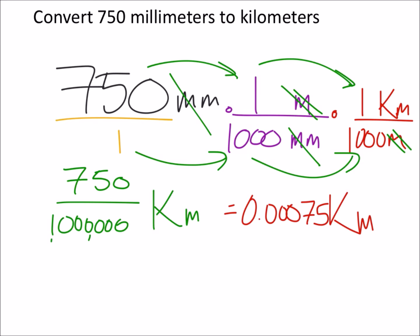And of course we can get this using the other method. We've got 750 millimeters, and on the chart, millimeters is as far to the right as we go. We got millimeters, centimeters, decimeters, meters, and we've got decameters, hectometers, and then finally kilometers.